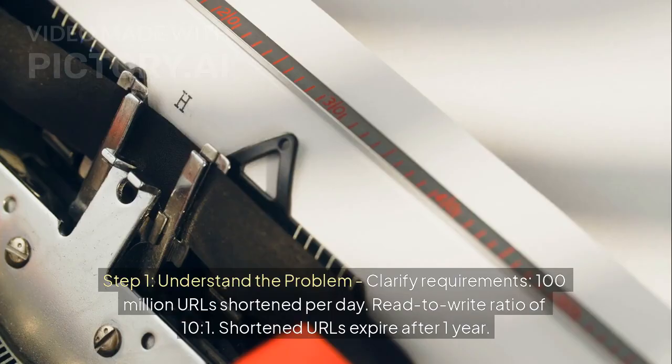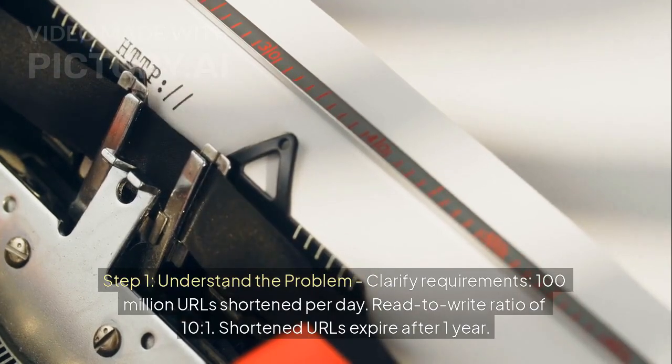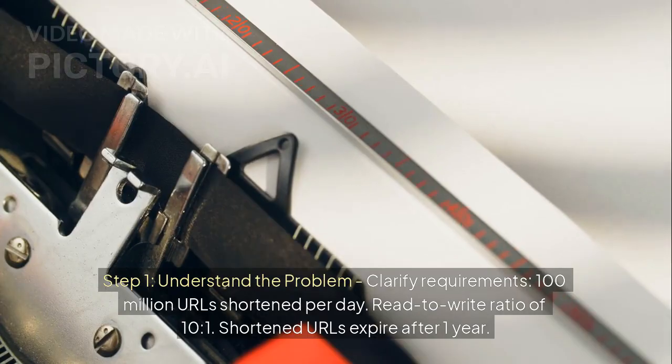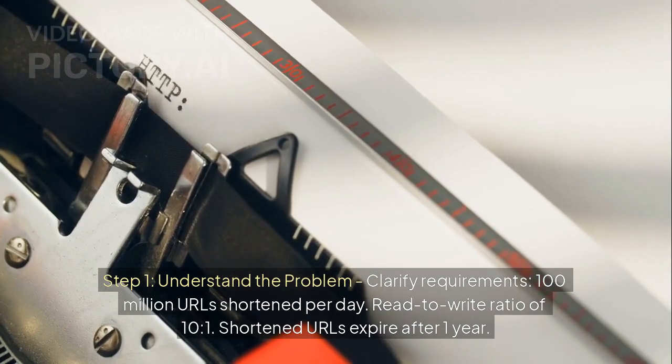Step 1: understand the problem and clarify requirements. 100 million URLs shortened per day. Read-to-write ratio of 10 to 1. Shortened URLs expire after one year.